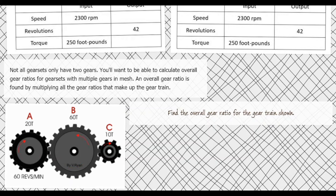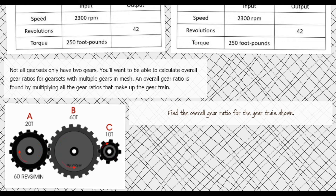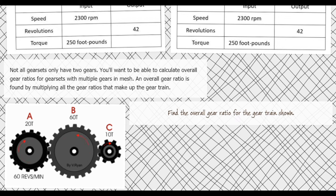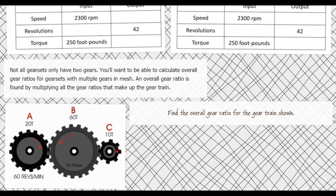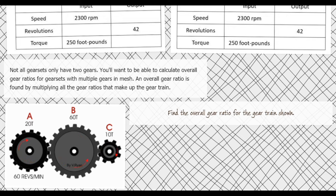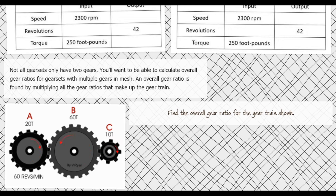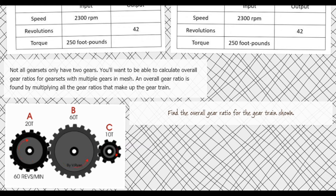We've been looking at gear pairs, but in reality we can have a gear train — a bunch of gears in a row. We need to determine the overall gear ratio when the input gear may be far from the output gear. In this example we have three gears: 20 teeth driving 60 teeth, which in turn drives 10 teeth.